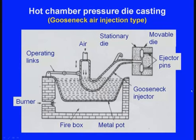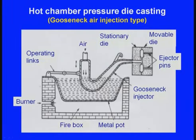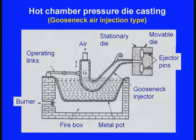Due to the pressure of the air, the molten metal is injected into the cavity between the two dies. A cooling system helps the metal solidify quickly. After solidification, the mobile die moves and ejector pins eject the casting. The process repeats — no need to carry molten metal from a far away place, so the rate of production is faster.